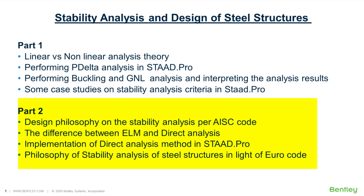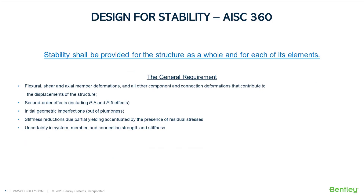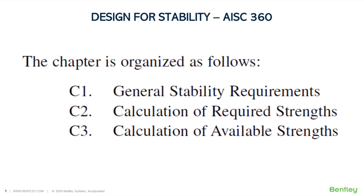The stability analysis and design criteria is specified in Chapter C of the AISC 360 code. I am using the term 360 because the chapter number is almost the same in the 2005, 2010, and 2016 editions — fundamentally the same except for slight amendments. The code mentions three important subjects: general stability requirements, calculation of required strength, and calculation of available strength.